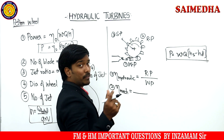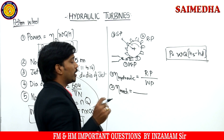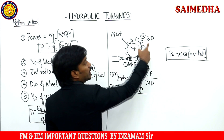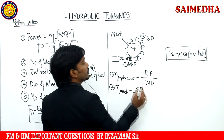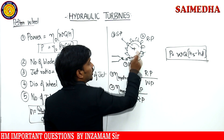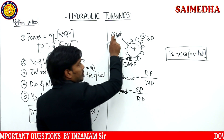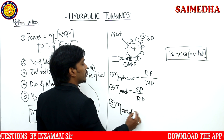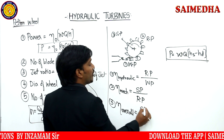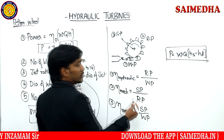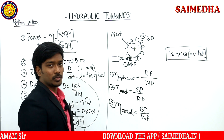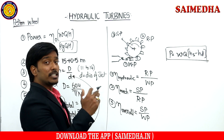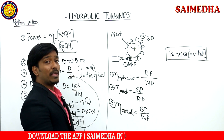The first efficiency is hydraulic efficiency: input is water power, output is runner power. The second efficiency is mechanical efficiency: input is runner power, output is shaft power — accounting for bearing loss and frictional loss. The logic is: output of stage 1 becomes input of stage 2. Overall efficiency is last divided by first, meaning shaft power divided by water power.